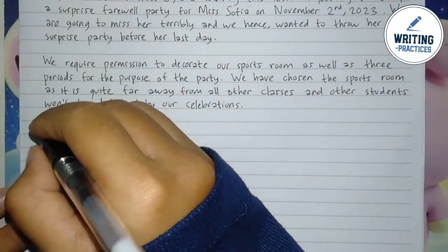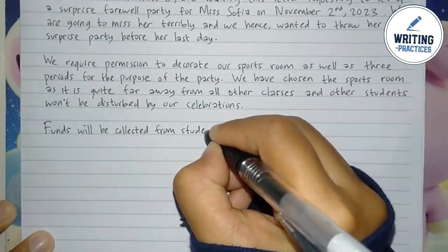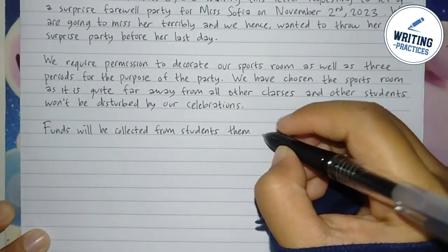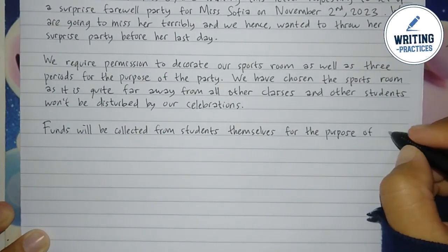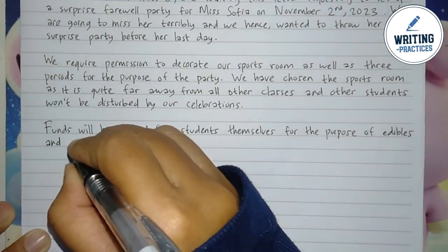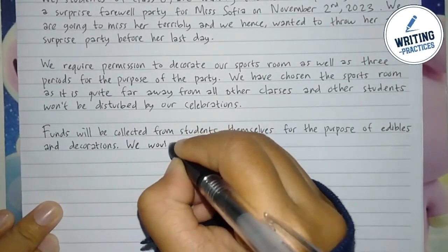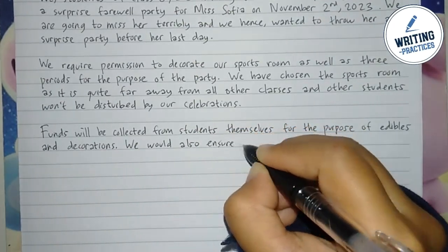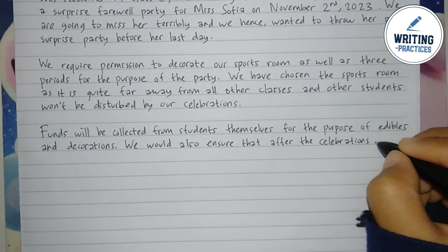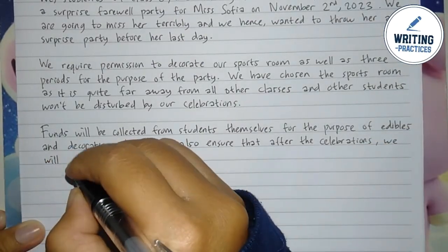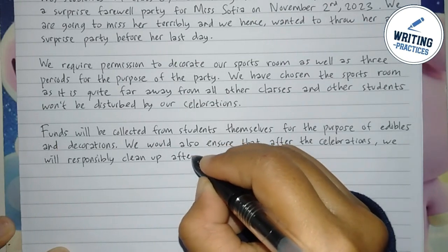In the third paragraph, address the funds. You have to explain whose money will be used for the party and how the funds were gathered. In this example, the money is from students of the class holding the party. Write how the funds will be spent — for example, for food, beverages, decoration, and a gift. You have to mention them all. And to convince the recipient, show your responsibility by stating that you will clean the room after the party. This is a must.